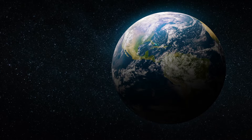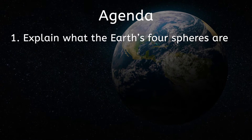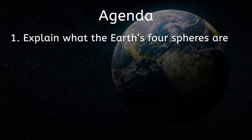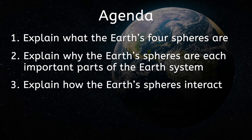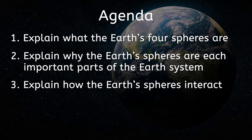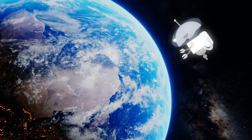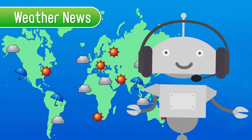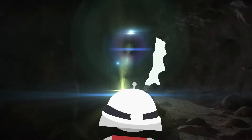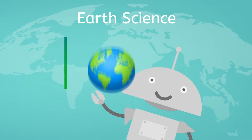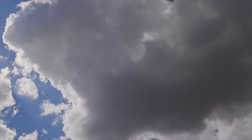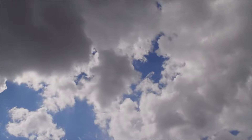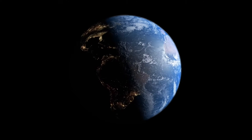By the end of this lesson, you'll be able to explain what the Earth's four spheres are, explain why the Earth's spheres are each important parts of the Earth's system, and explain how the Earth's spheres interact. Let's get started! From the deepest movements in the planet's core to the formation of weather miles above the ground, the Earth is home to millions of connected processes. Together, we call them the Earth system.